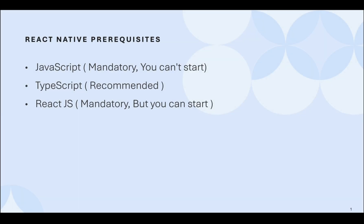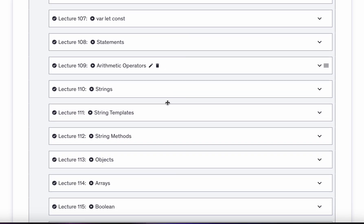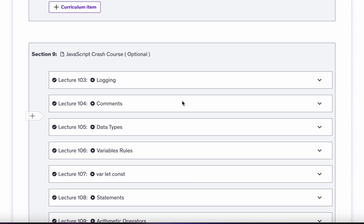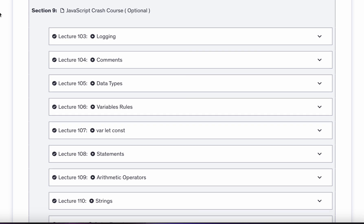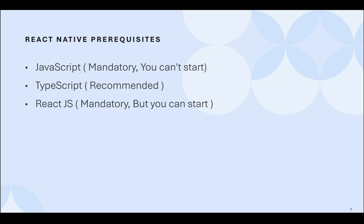Before you start learning React Native, you need to know some requirements. First, you need to learn JavaScript — the basics like variables, functions, arrays, objects, promises, async/await, and also ES6 features like arrow functions, destructuring, and the spread operator. If you don't know JavaScript, don't worry — there's a crash course section that covers the JavaScript needed for React Native, and it's also available on the YouTube channel.